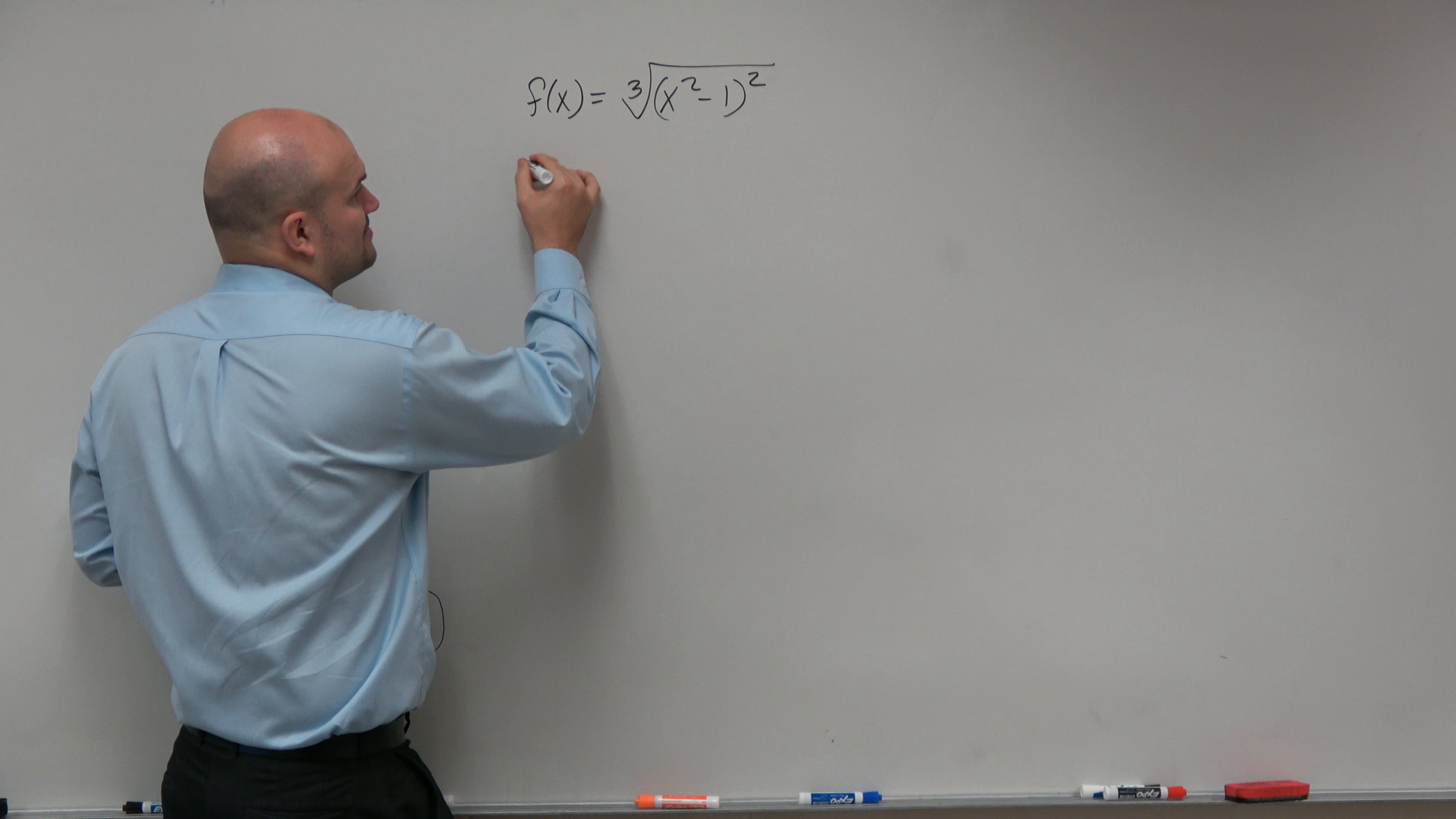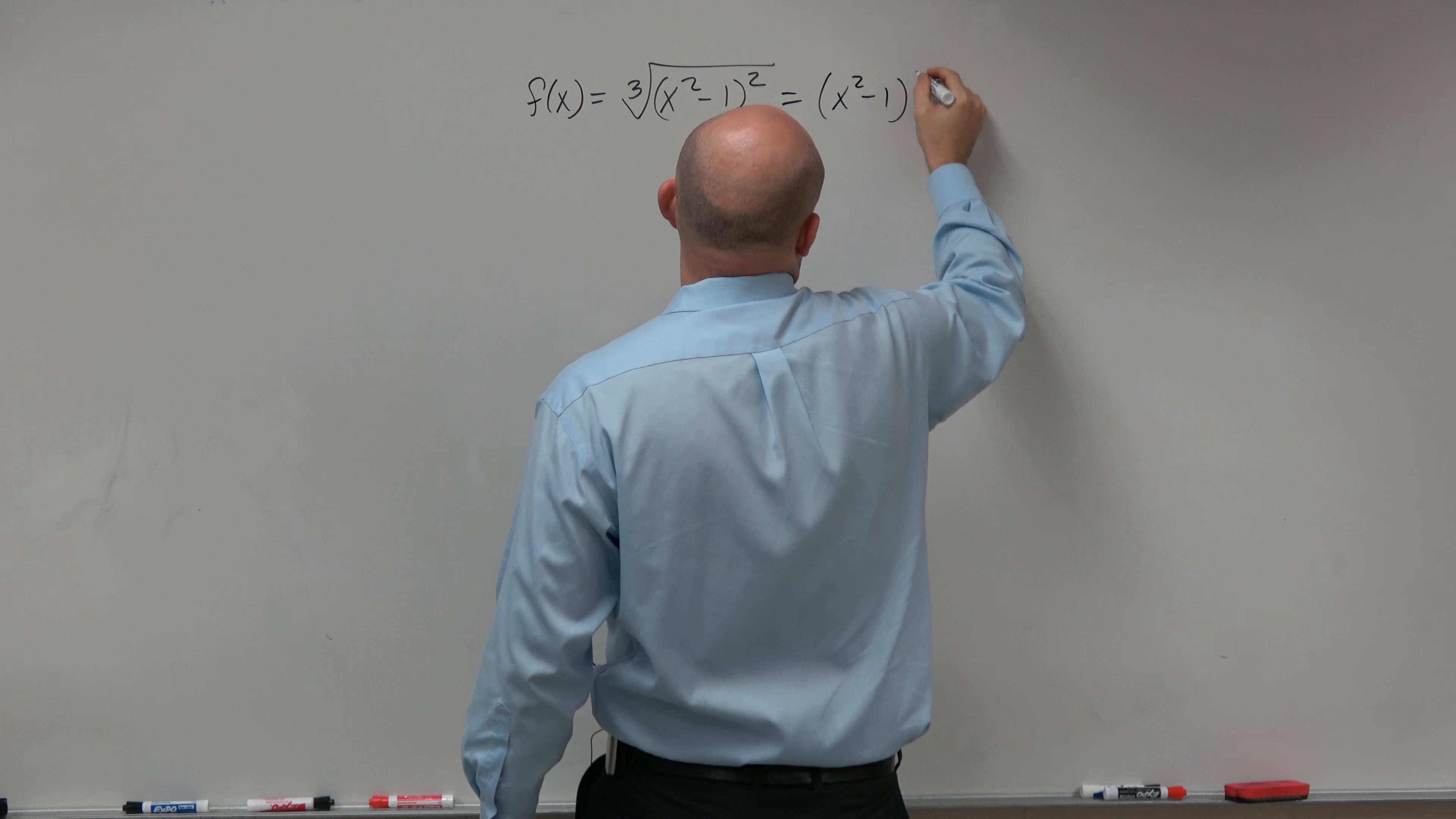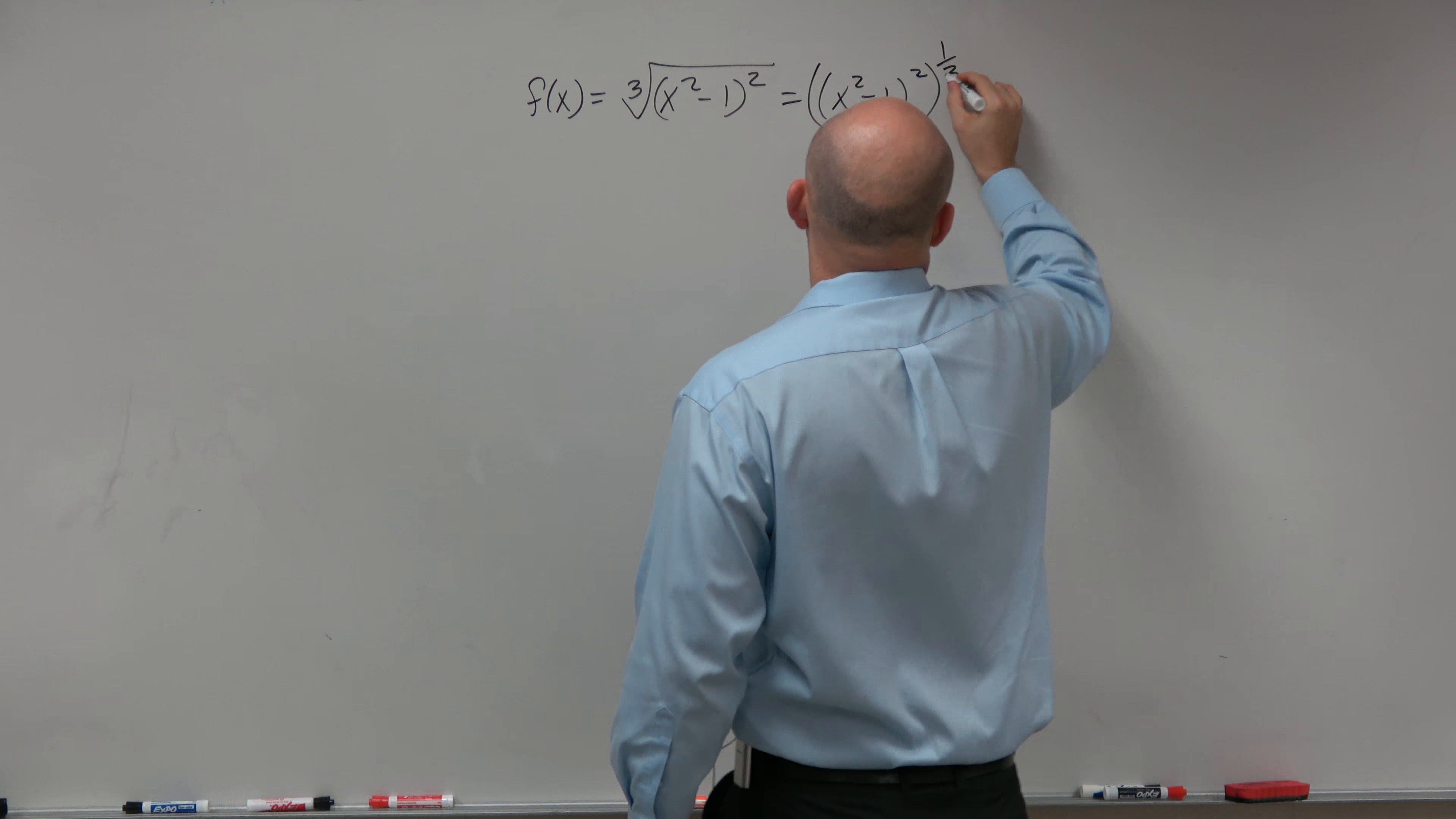So the first thing I'm going to do is rewrite this like this: (x² - 1)² and then to the third, that's really the same thing as to the 1/3 power.